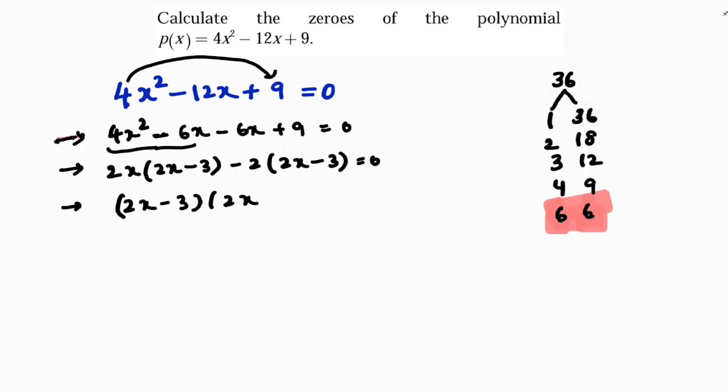So 2x minus 3 into 2x minus 3 equals 0. So now 2x minus 3 equals 0 and the other one is 2x minus 3 equals 0. So here 2x equals 3, x equals 3 by 2. Same calculation gives x equals 3 by 2.